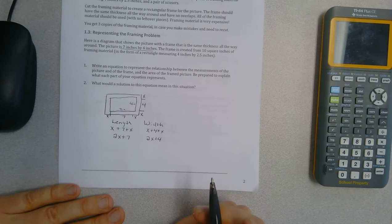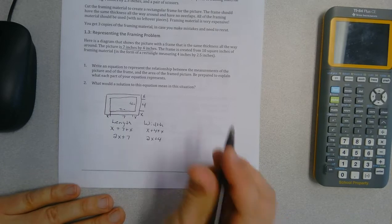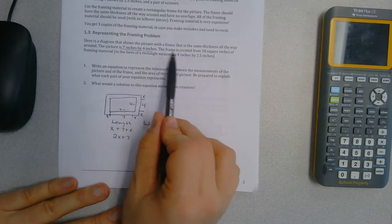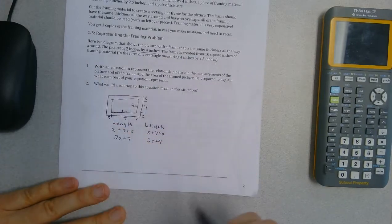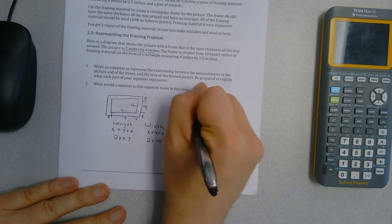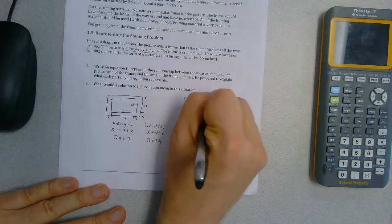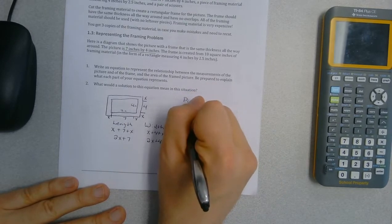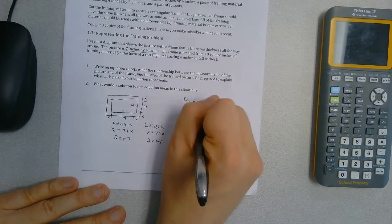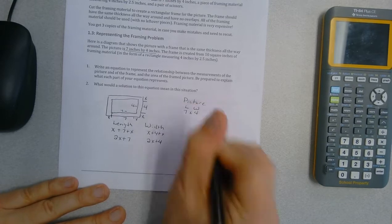Now in looking at the area, we have some information. The frame is from 10 square inches of material. So we have the picture which the length is 7 and the width is 4. You can switch those, and to get the area I multiply, so 7 inches times 4 inches is 28 square inches.